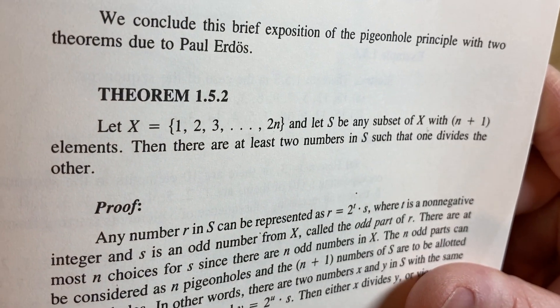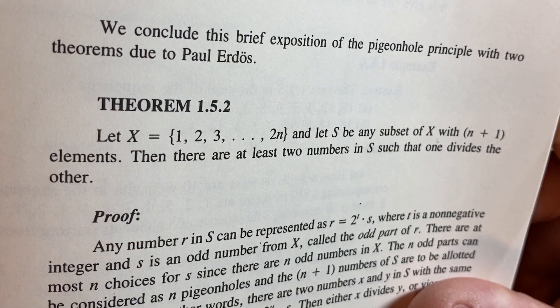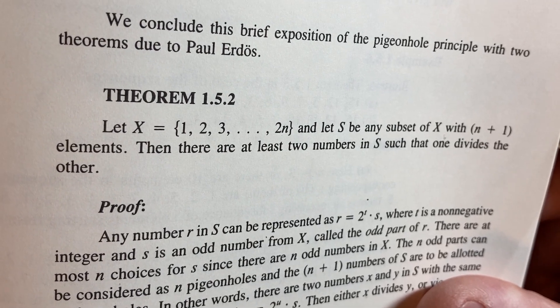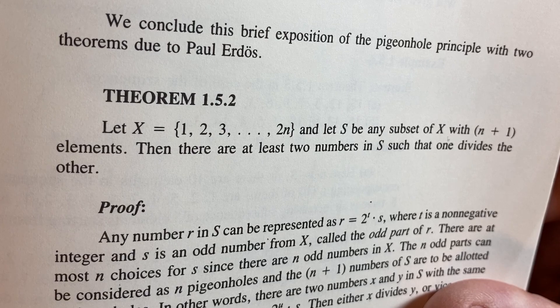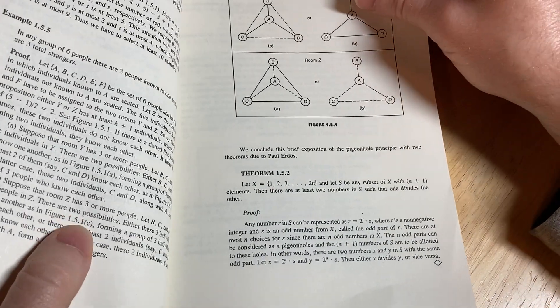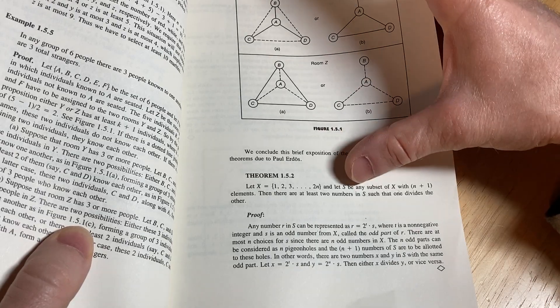So let X be a set containing the elements 1, 2, 3, all the way to 2N, and let S be any subset of X with N plus 1 elements. Then there are at least two numbers in S such that one divides the other.